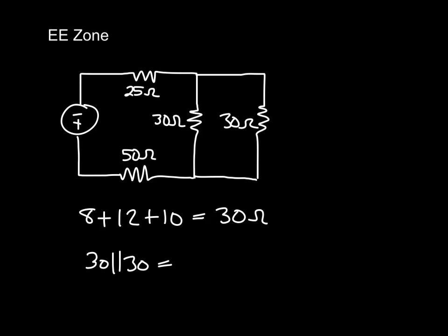So this is going to be 900 divided by 60, and that's going to be 15, 15 ohms. And so now let's go ahead and replace those two 30 ohm parallel resistors with 15 ohms.